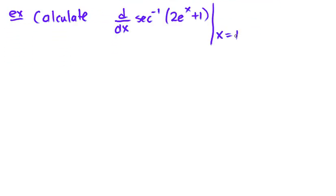So, let's calculate the derivative of the inverse of secant of 2e to the x plus 1. And then evaluate it at x equals to 1.